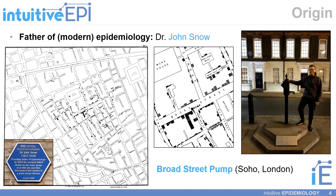John Snow's claim to fame was mapping cholera cases in the Soho neighborhood of London. This epidemiological exercise eventually resulted in the removal of the handle from the Broad Street pump, stopping this infectious disease outbreak.